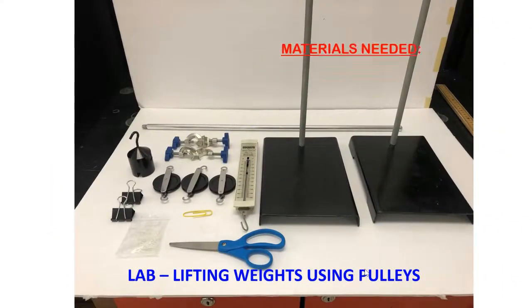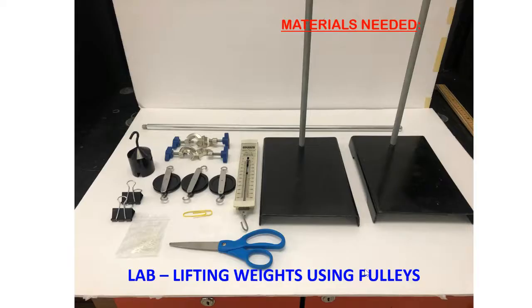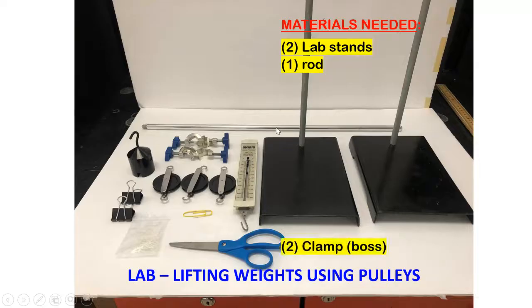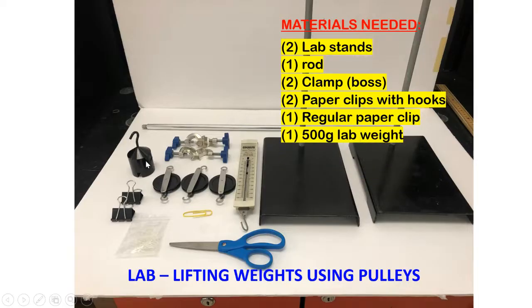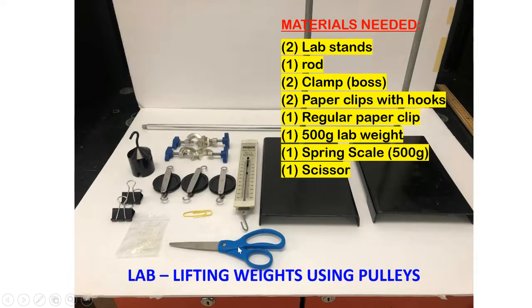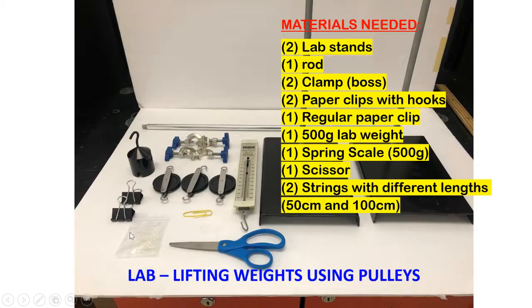To complete this lab, you need the following materials: two lab stands, one rod, two clamps, two paper clips with hooks, one regular paper clip, a 500 gram lab weight, one spring scale up to 500 grams, one scissor, and two strings with different lengths—one is 50 centimeters, the other one is 100 centimeters.